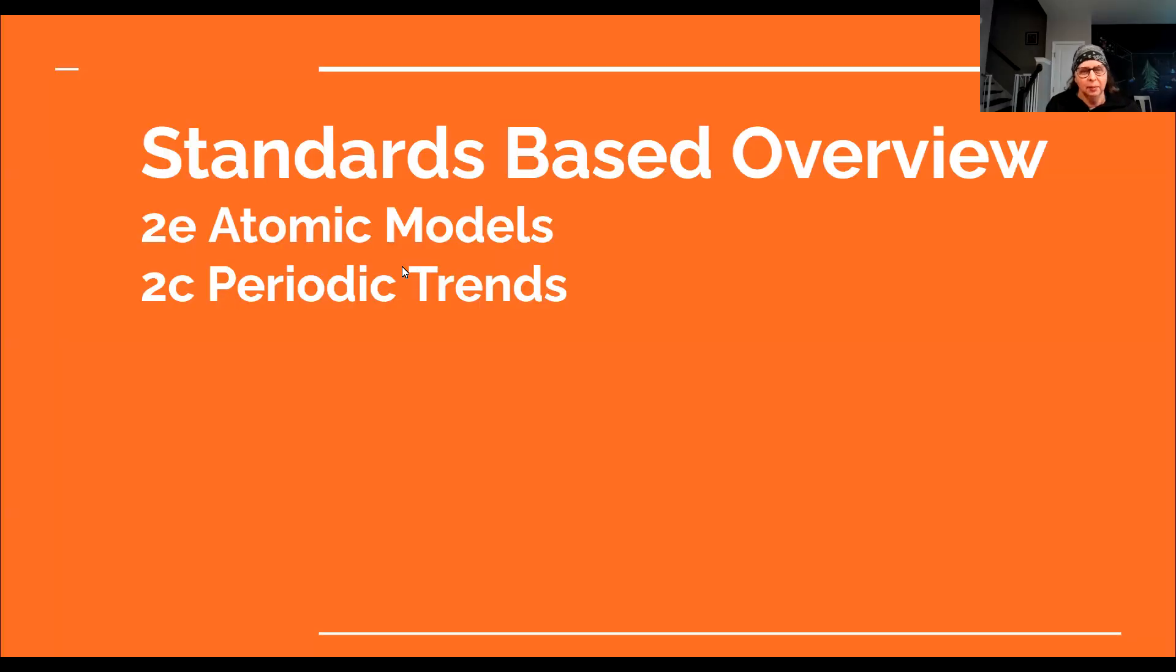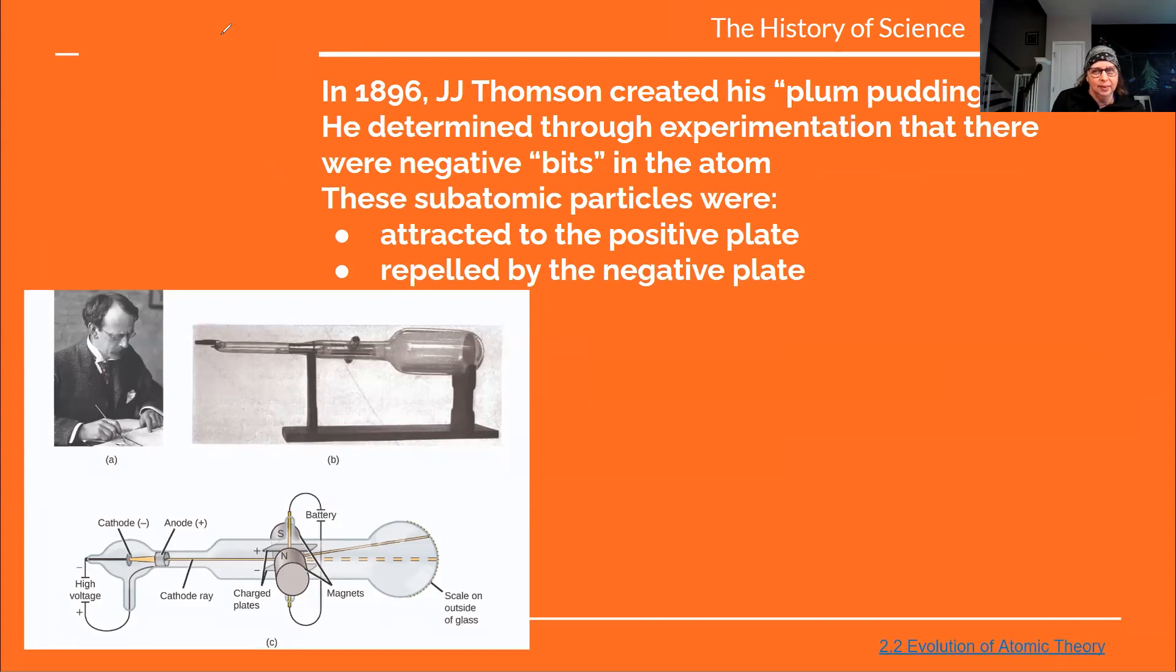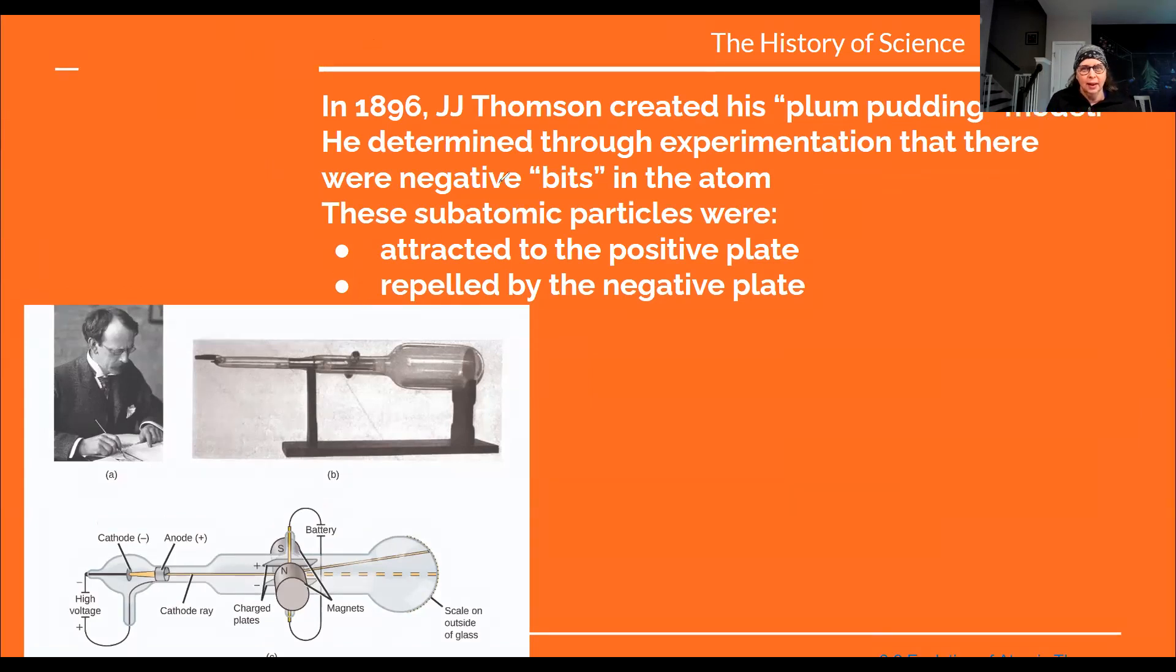Today we're going to discuss atomic models and periodic trends. We have JJ Thomson right here. He created what he called his plum pudding model. Plum pudding is kind of like pudding, but it has lots of little bits and pieces in it. When he put it in with this cathode ray tube, he found out that these subatomic particles were attracted to the positive plate and repelled by the negative plate.